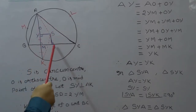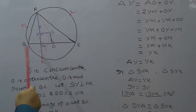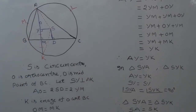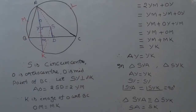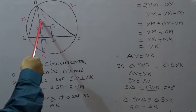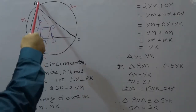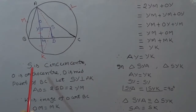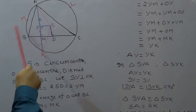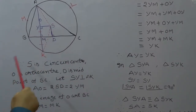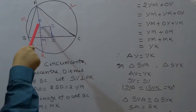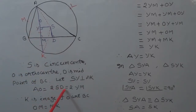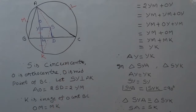D is the midpoint of BC. Now let us take SY perpendicular to AK. Since O is the orthocenter, AO is equal to 2 times SD. Since MDSY is a rectangle, SD is equal to YM, so AO is equal to 2 times SD, which is equal to 2 times YM.